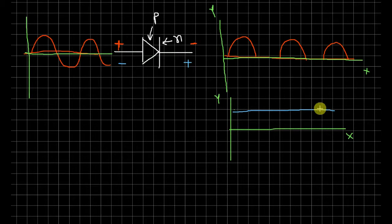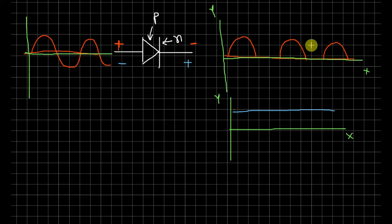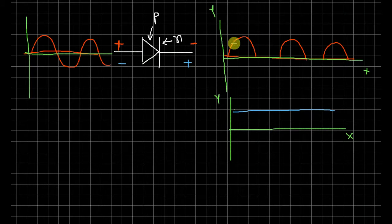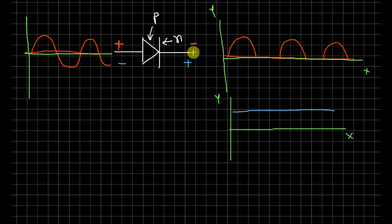The DC output is not a straight DC — it is pulsating DC, which is not efficient. To smooth the signal, we can add a capacitor to the diode circuit.